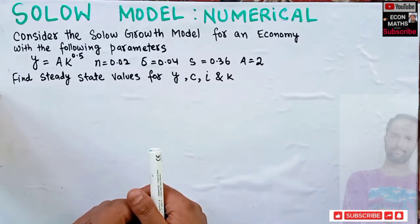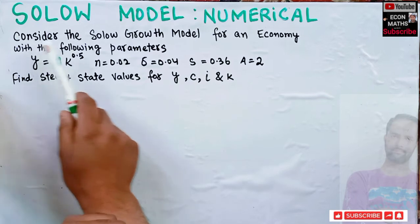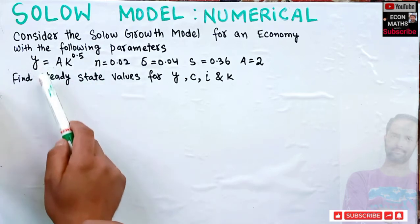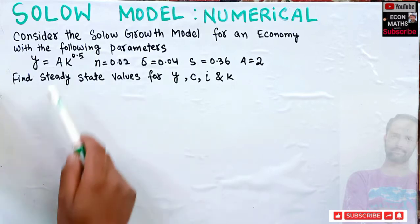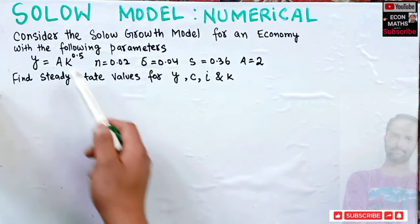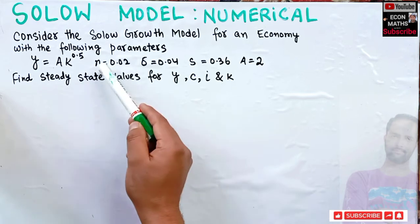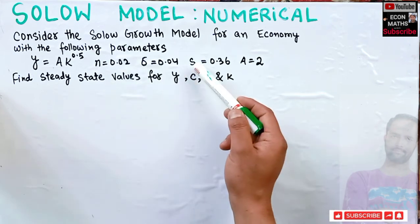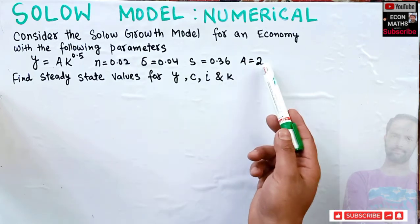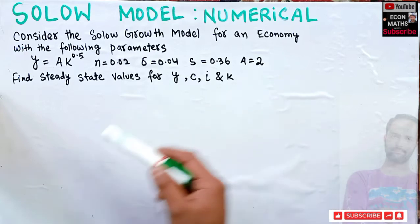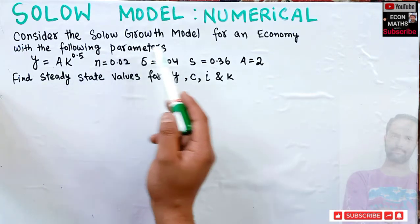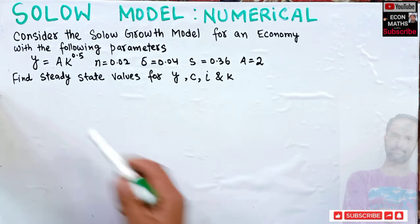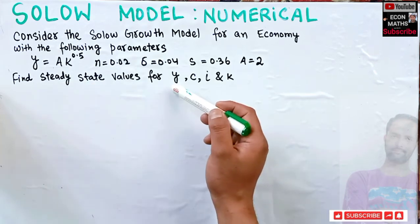In this video we will solve a numerical on the Solow growth model. The question is: consider the Solow growth model for an economy with the following parameters. The production function is y = a·k^0.5, where a denotes the state of technology and k is capital per worker. The population growth rate n is 2%, depreciation rate δ is 4%, savings rate s is 36%, and a = 2.